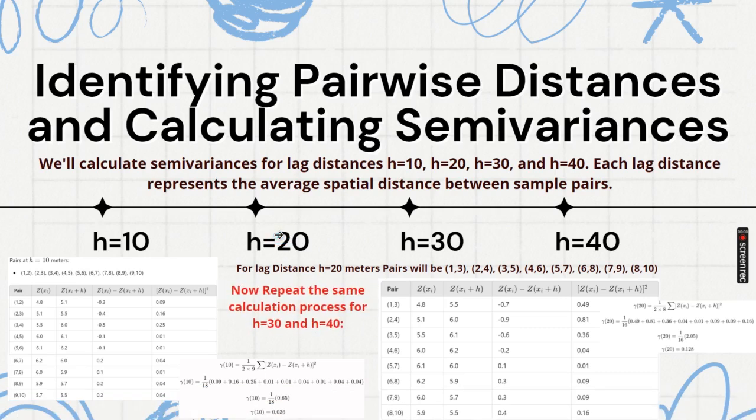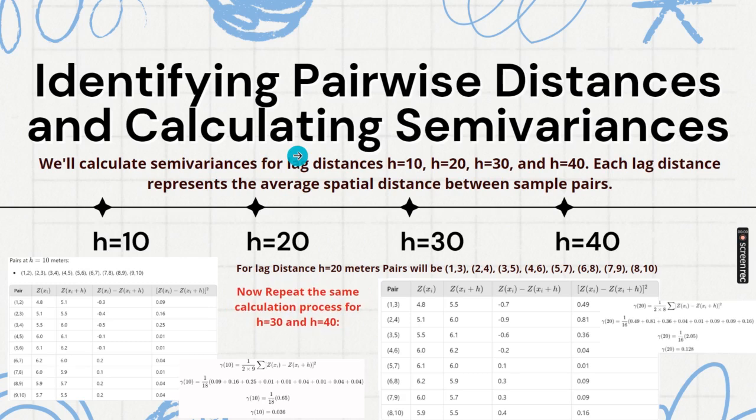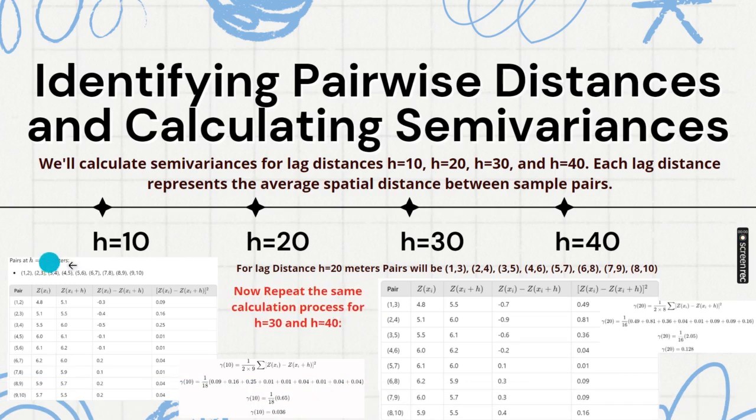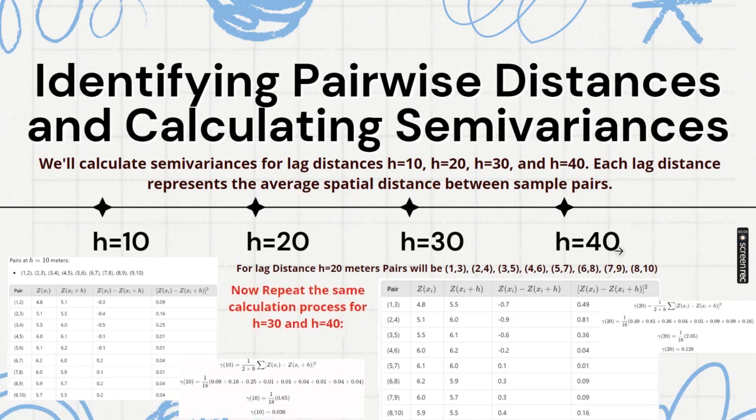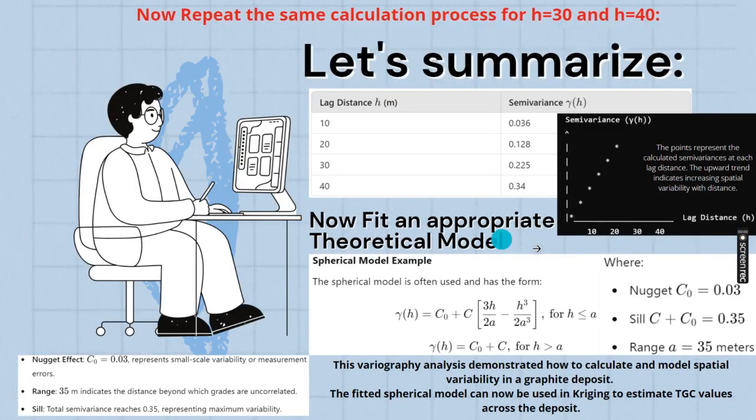In this way, with increasing lag spacing, different combinations will be generated. And from those lag spacings, every time one variance, or semi-variance, you can calculate. Now I have shown two examples, for 10 meter lag spacing and 20 meter. And similarly, using this same process, just increase that lag spacing and calculate the same way. What will happen? Let us summarize.